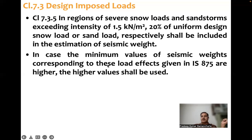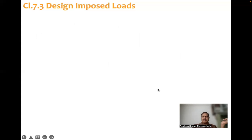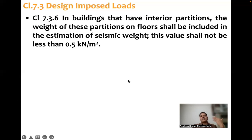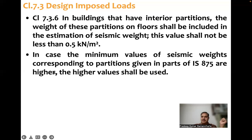In case the minimum values of seismic weight corresponding to these load effects given in IS 875 are higher, then the higher load values shall be considered. Clause 7.3.6: In buildings that have interior partitions, the weight of these partitions on floors shall be included in the estimation of seismic weight. This value shall not be less than 0.5 kN per m². Compute the weight of the partition distributed over the floor area — if it is more than 0.5 kN/m², consider that value; if less, use 0.5 kN/m².